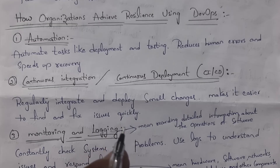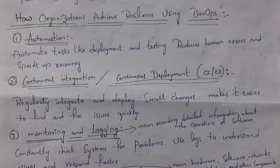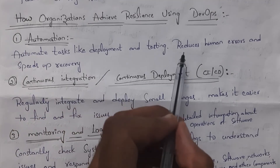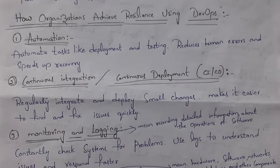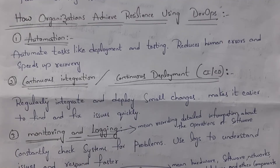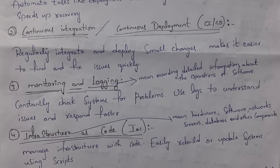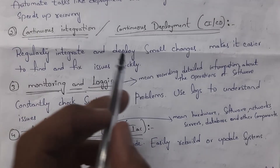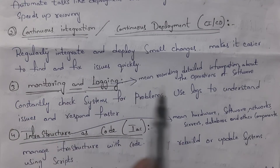How do organizations achieve resilience using DevOps? First, DevOps supports automation — in DevOps, each and every task is automated. Human beings do not manually perform tasks; the system automatically performs various kinds of tasks. Automated tasks like deployment and testing reduce human errors and speed up recovery, so even if any error occurs, the system solves the problem. Second is continuous integration and continuous deployment. Whenever a developer updates a small part of software, automated testing takes place, making it easy to find and fix errors quickly.